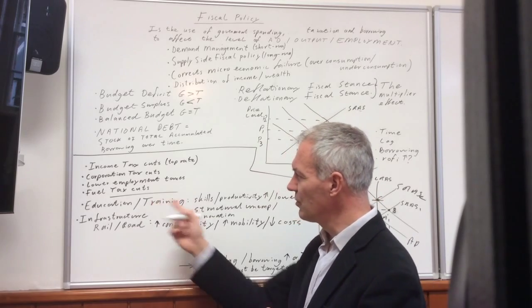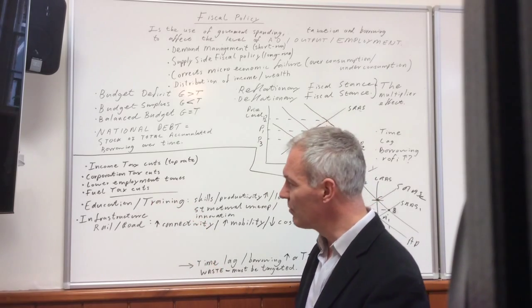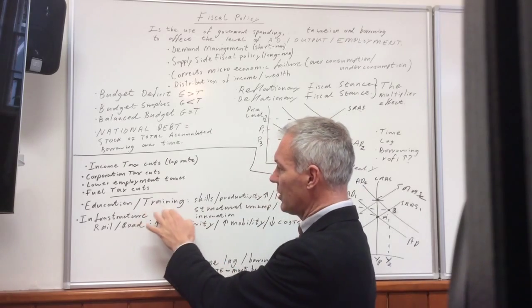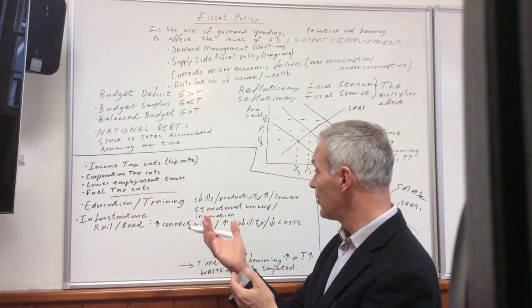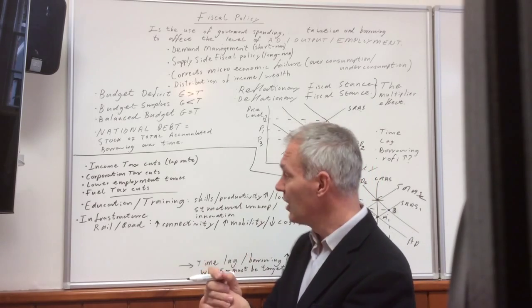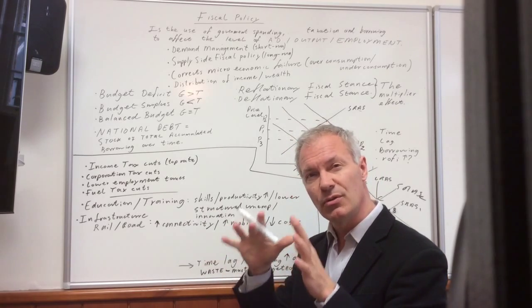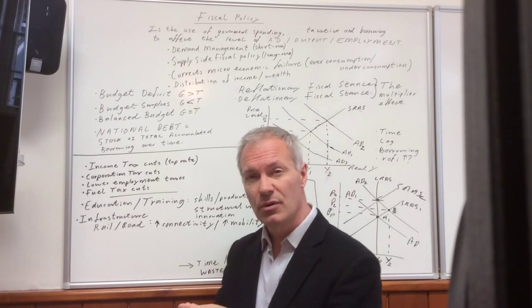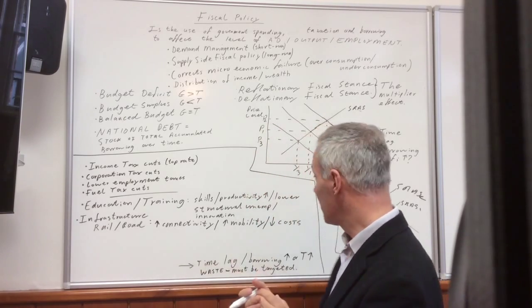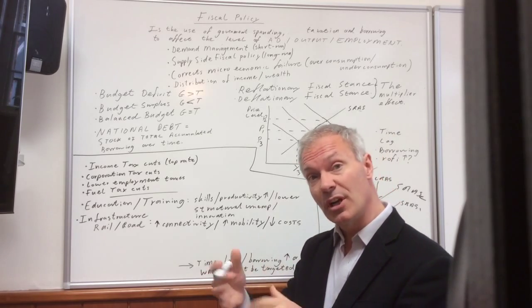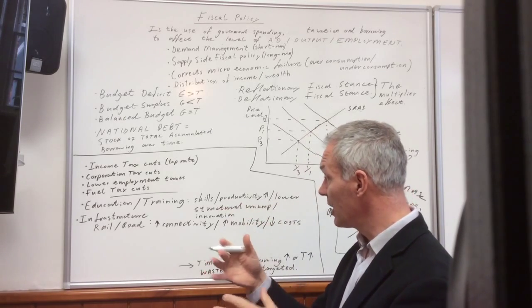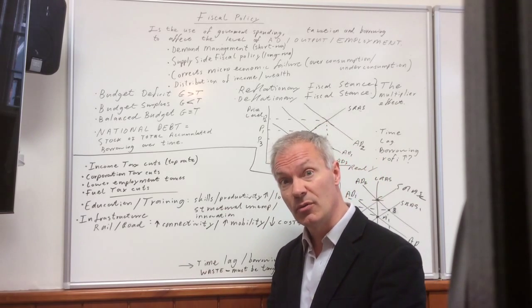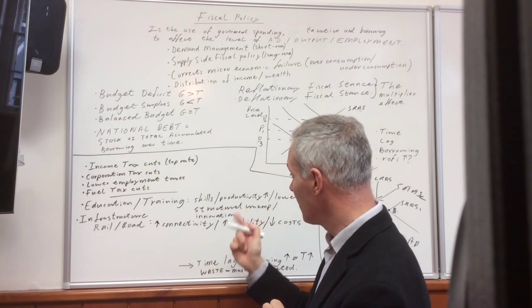What about government expenditure? We'll just choose two fairly straightforward examples. We'll look at education and training. These basically should improve the skills and productivity of the labour force. They should increase what we call human capital. They lead to people who are more educated, more skilled, and more productive workers. If people are retrained, for example, it could lower structural unemployment, they could lead to more innovation, as we have more highly educated people producing goods and services.